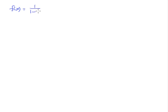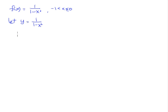Now what we have is f(x) = 1 over (1 minus x squared), for the domain of negative 1, excluding 1, to 0, including 0. So this is our function, and to find the inverse it's not difficult at all. We just let y equal to 1 over (1 minus x squared), then cross multiply — or just reciprocate both sides — we have 1 minus x squared equals 1 over y.